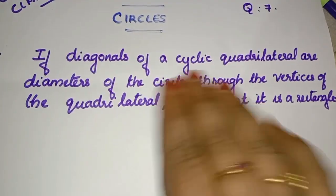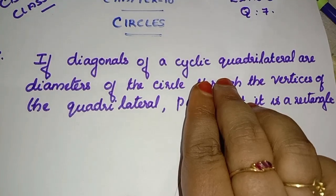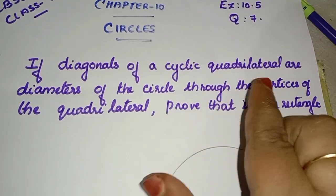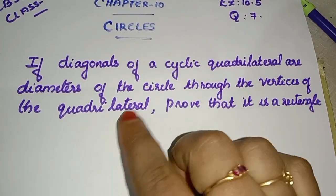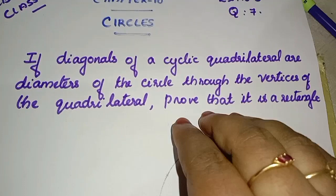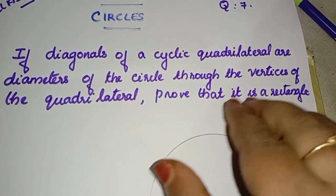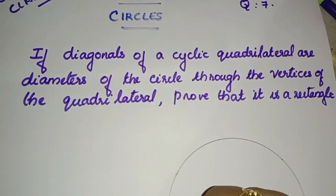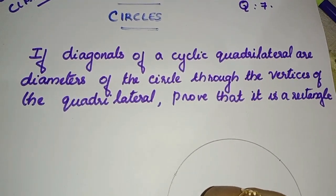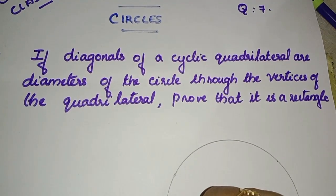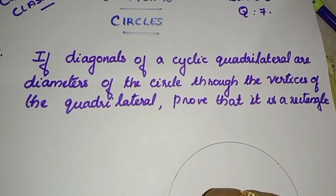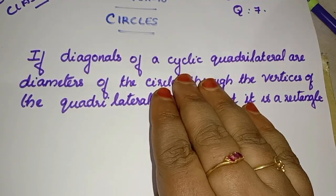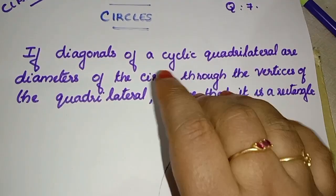If the diagonals of a cyclic quadrilateral are diameters of the circle through the vertices of the quadrilateral, prove that it is a rectangle. What we are going to say is a cyclic quadrilateral.